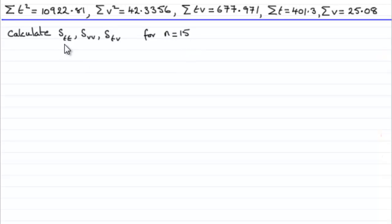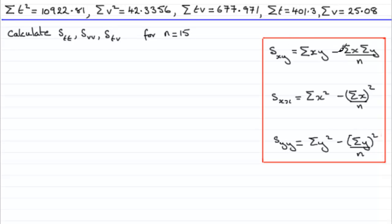Now to work out these values, what you've got to remember is these particular statistics, how we work them out. They're given in your book of tables, and we've got S_XY then is the sum of XY minus sigma X times sigma Y over n.